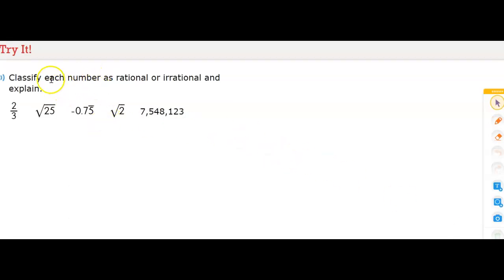All right, we need to classify each of these numbers as rational or irrational. And I'm going to just use different colors by circling like I did before just to save me rewriting these again. So two thirds. We'll start with the ones that are rational. So rational will be in purple. So rational would be the square root of 25. Another rational would be 7,548,123.